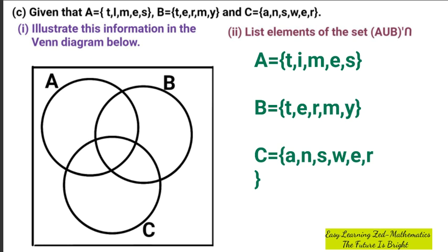We're going to start with the first element of set A, which is T. The question we're going to ask ourselves is: is T found in B? Yes. Is T found in C? No. Therefore, T will be on the intersection of set A and B, which is going to be here. We are done with the first element in set A, which is T.